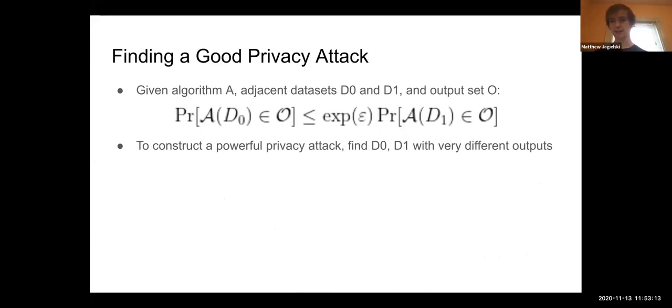That's basically how the approach works. But what I haven't told you yet is how you actually instantiate it. How do you find this D0, D1, and O output set? What you want here is a pair D0 and D1 that result in very different outputs. For a machine learning algorithm, you want two datasets that are close to each other that provide very different models when you run training.